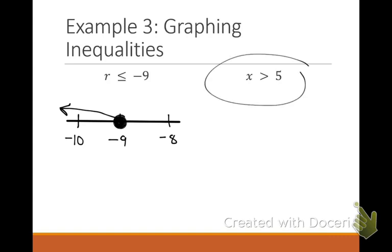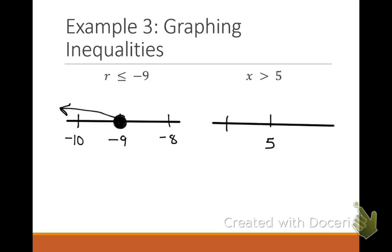Last one — do it on your own, then compare with your neighbor. The middle number is five; to the left is four; to the right is six. Is it open or closed? It's open because there's no equal to, which means five will not make it true — five is not greater than five. Which way does the arrow go? To the right, showing all numbers greater than five make the inequality true — seven, ten, twenty, two million three hundred thousand. That arrow to the right shows all possible solutions. That's everything you need to know for 4.4.